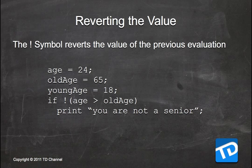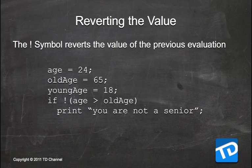One final logical operator is the NOT symbol (!), which allows you to invert a value. For example, if age is greater than old_age, you would normally print 'you are a senior.' But by putting an exclamation point outside the test, we invert whatever it returns. Age is 24, old_age is 65, so 24 greater than 65 is false — and NOT turns that false into true. Therefore we go in and print 'you are not a senior.'